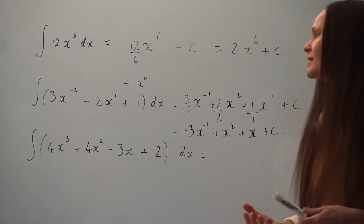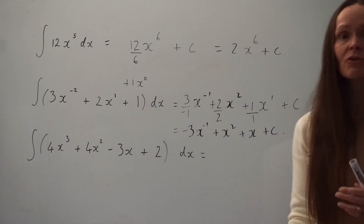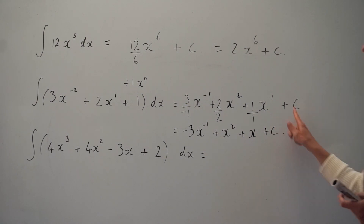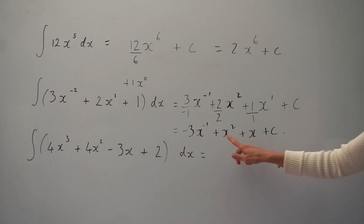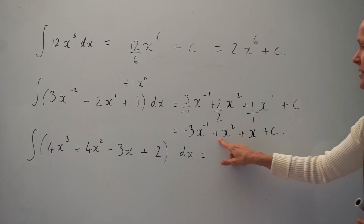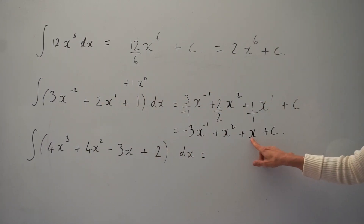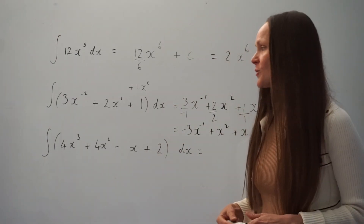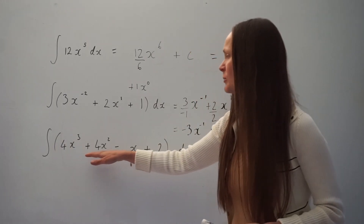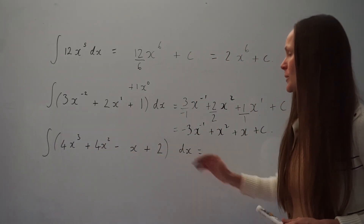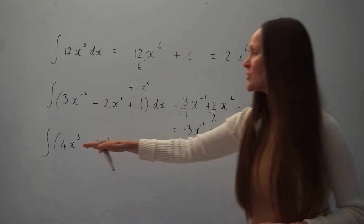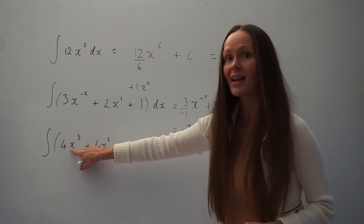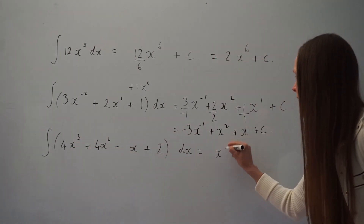A useful way to check your answers is to remember that integration is the reverse process of differentiation. If you differentiate your answer it should take you back to what you started with. For example, if you differentiate x squared you get 2x, which is correct. In this final question we have to find the integral of 4x cubed plus 4x squared minus x plus 2 with respect to x. Just like before, we're going to integrate each term one by one.